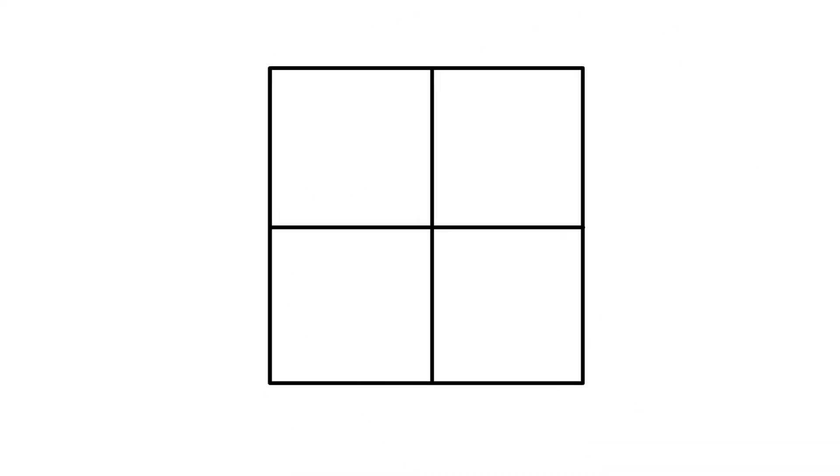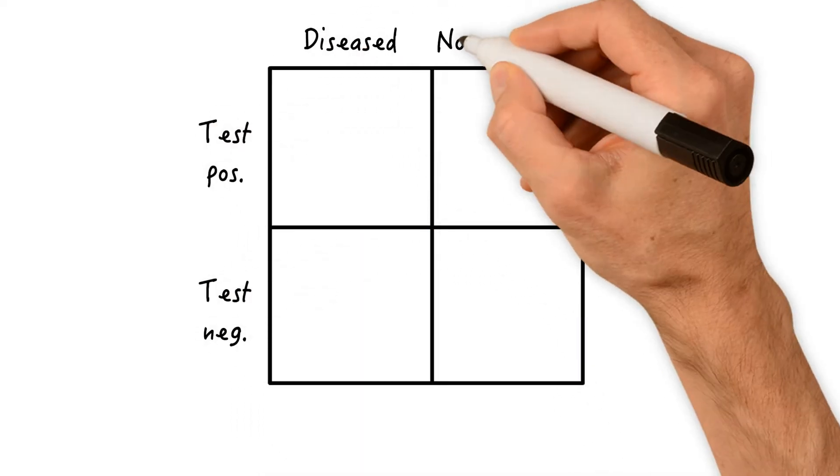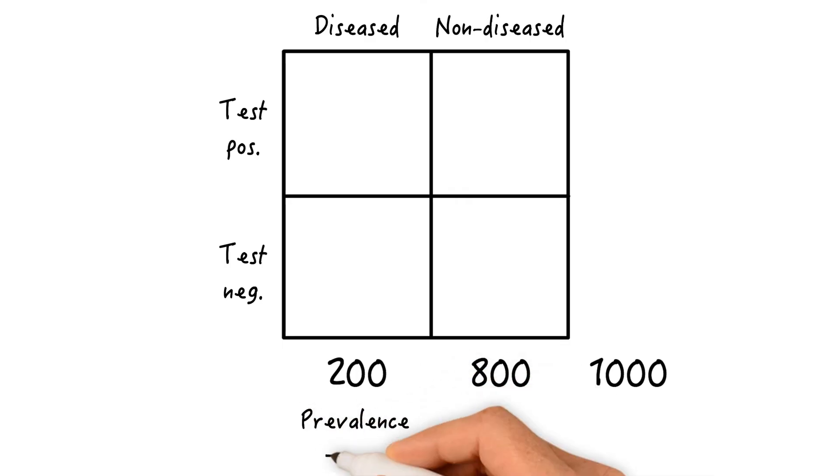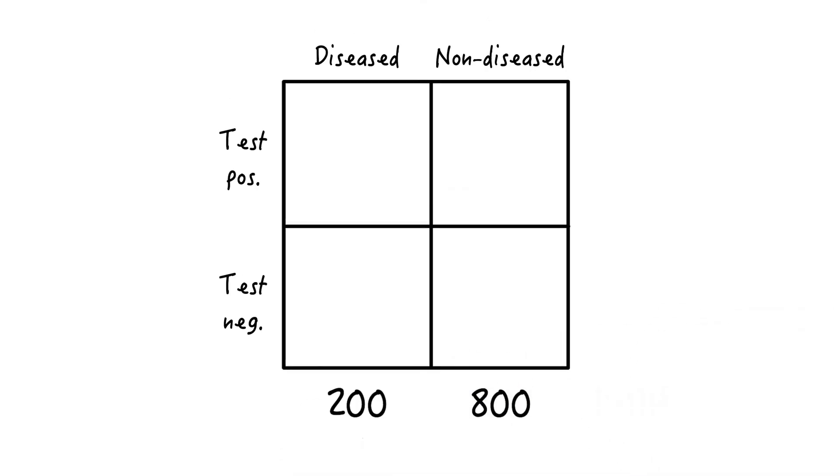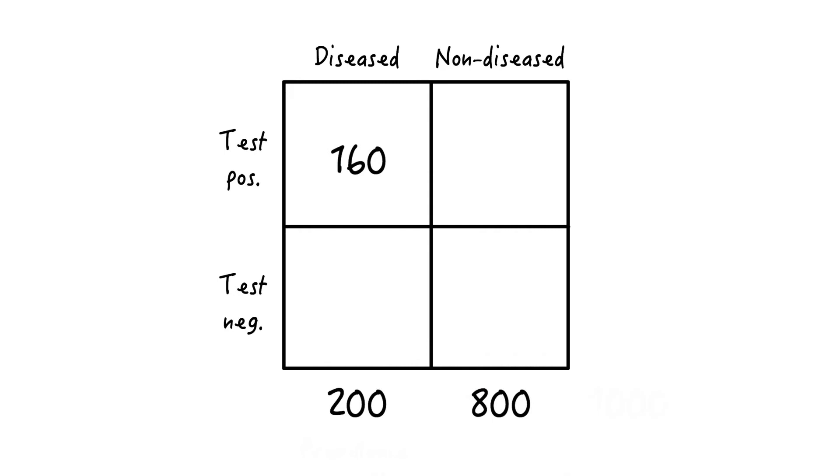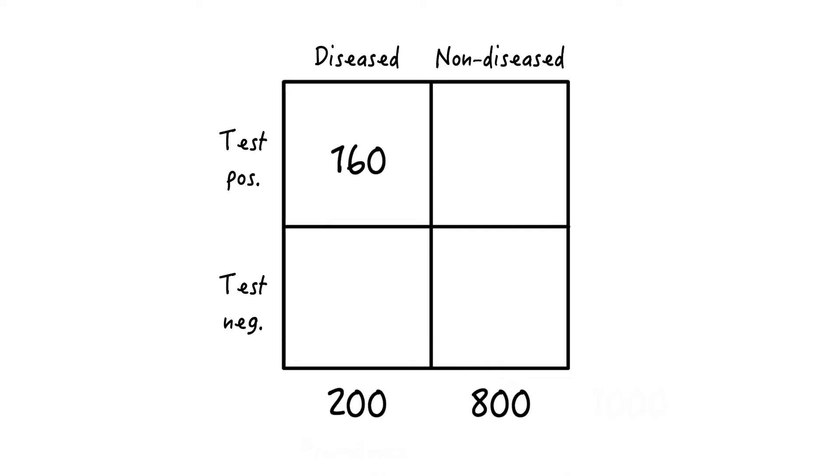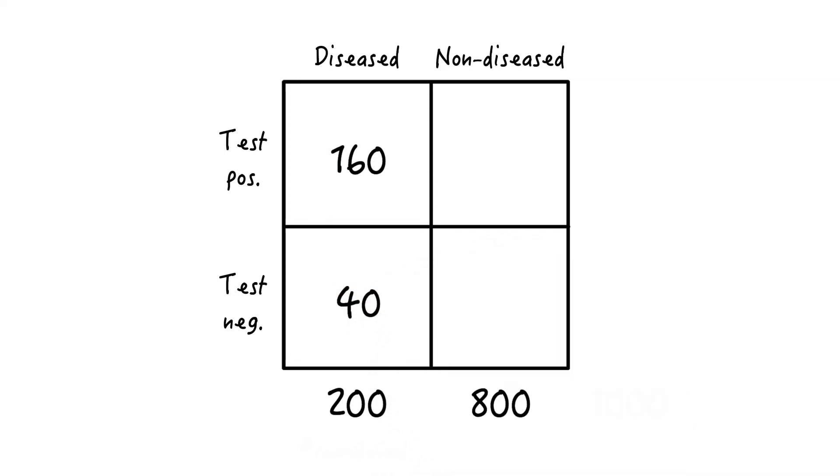Let's look at an example for better clarity. Let's pick a population of 1,000 people and let's say that 200 of them have the disease of interest. So this means that the prevalence is 20%. Now let's also say that 160 out of the 200 diseased people test positive whereas 40 are missed by the test.